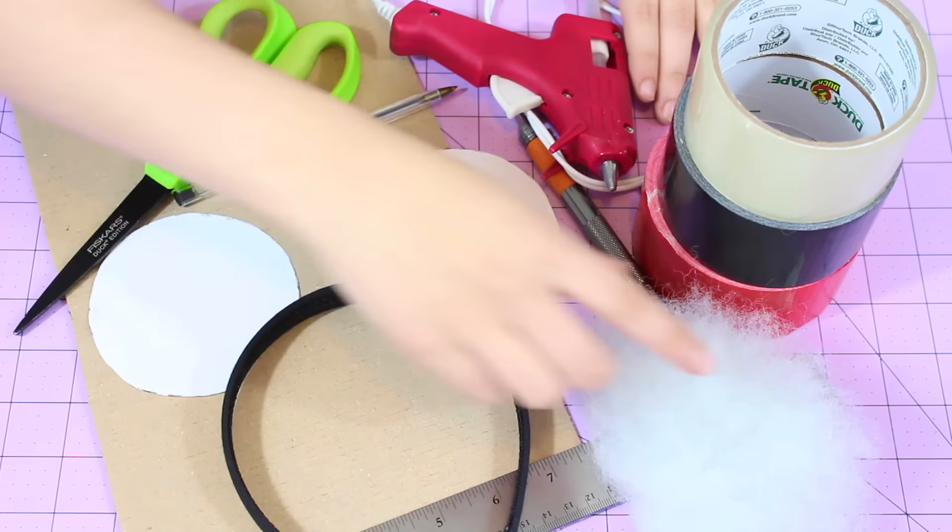So let's get into the tutorial. Okay guys so for the first step you're going to need your cardboard and your Minnie Mouse ear templates as well as your pin. So what I'm going to do here is just take my templates and I'm just going to trace these onto the cardboard. Okay guys so now we should have our templates right here. Now I'm going to take my scissors and I'm just going to start cutting these out.